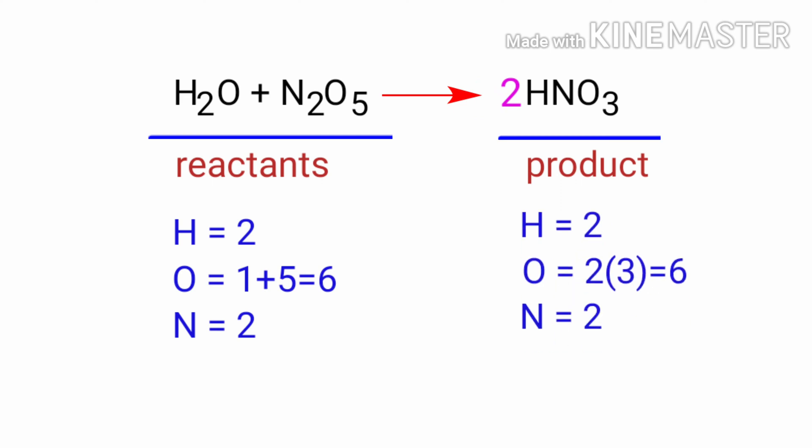The equation is now balanced. There are two hydrogen atoms, six oxygen atoms and two nitrogen atoms on both sides.